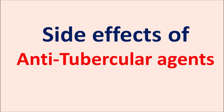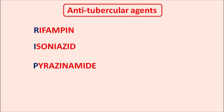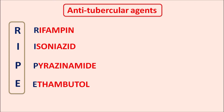Today we are going to discuss the side effects of anti-tubercular agents. There are mainly four types of first-line drugs which are orally administered: rifampin, isoniazid, pyrazinamide, and ethambutol. These four drugs can be remembered with the simple code RIPE. We also have streptomycin, which is given by IV route and can be used as a first-line agent. These drugs are given in combination to produce efficient treatment for tuberculosis.